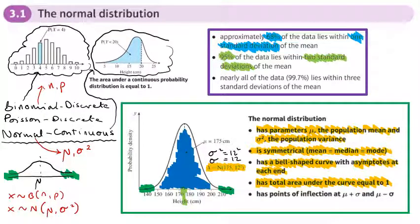So within two standard deviations, we've already got 95% of the area. And in fact, nearly all of the data — 99.7% — is within three standard deviations of the mean. So we've got this normal distribution which we can use to model continuous data. It's bell-shaped, it's symmetrical, the mean is in the middle, and we're interested in the variance along with the mean. The total area is one. Within one standard deviation: 68%. Within two standard deviations: 95%. Within three standard deviations: 99.7% of the data.